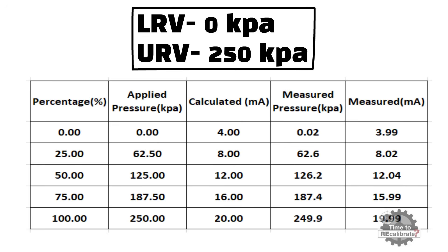Now repeat the same steps for 50% of input, 75% of input, and 100% of input. For example, apply approximately 125 kPa pressure to the transmitter and note down the measured pressure value from the transmitter display. The measured pressure value should be nearest to 125 kPa. At the same time, note down the value of milliampere from the digital voltmeter. The measured milliampere value should be nearest to 12 milliampere.